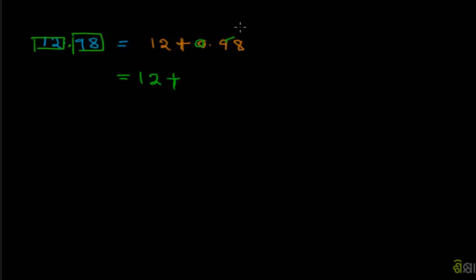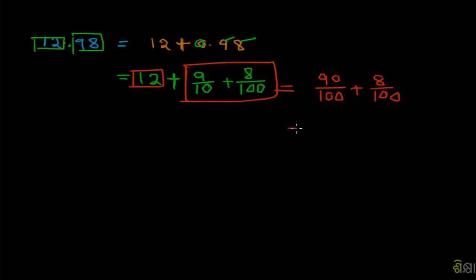You can see that 9 by 10 and 8 by 100. So these times the value, the value of that is going to be 90 plus 8, then it is going to be 12 plus 98 by 100, which equals 12.98 by 100.